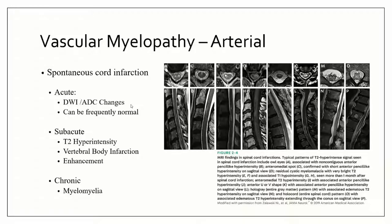Subacutely, if you wait a couple of days, you'll start to see T2 changes. Sometimes you can even see vertebral body infarction, because those radicular arteries supply some bone. You will see enhancement with contrast — people may think 'enhancement equals transverse myelitis,' but ischemia enhances subacutely, just as in the brain, because you disrupt the barrier between the organ and the blood vessel. Chronically, you'll get myelomalacia — atrophic changes that develop over time following an ischemic injury.